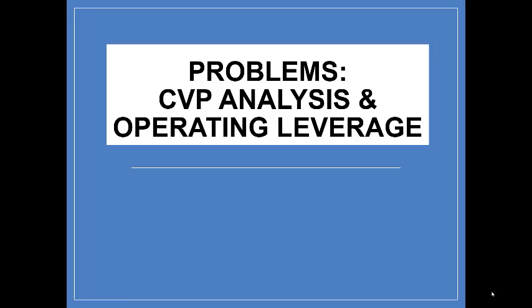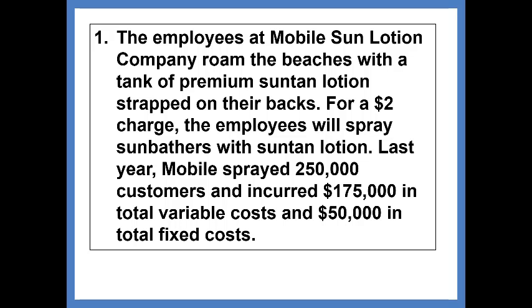Let's review CVP analysis. If you'll turn to your lecture notes, we'll get started. The first problem shows that the employees of Mobile Sun Lotion Company roam the beaches with a tank of premium suntan lotion strapped on their backs. For a $2 charge, the employees will spray sunbathers with suntan lotion. Last year, Mobile sprayed 250,000 customers and incurred $175,000 in total variable costs and $50,000 in total fixed costs.